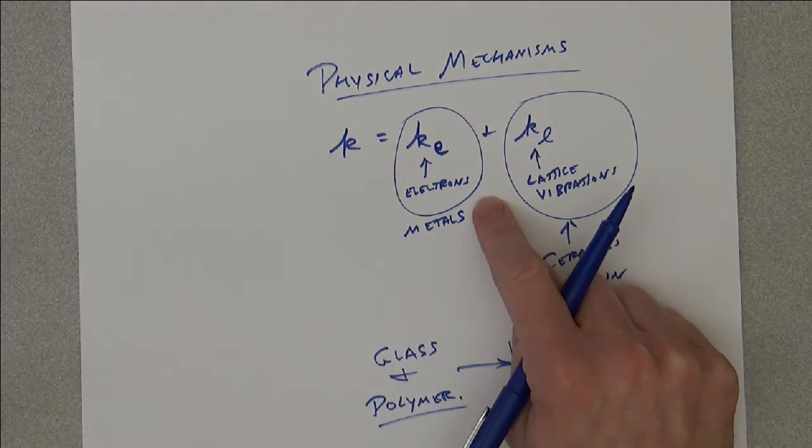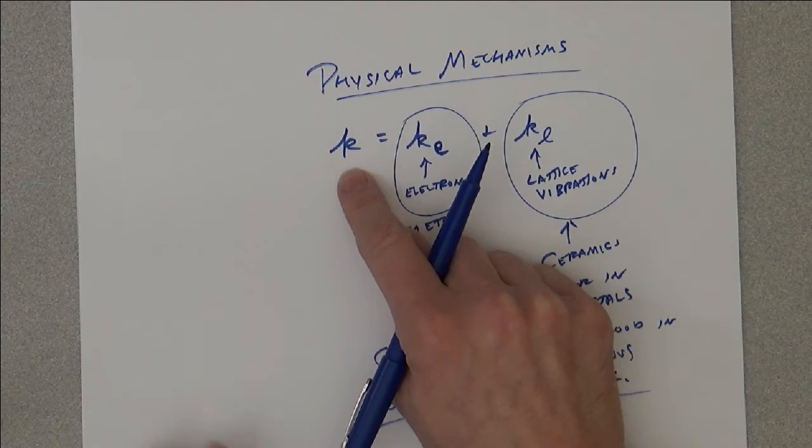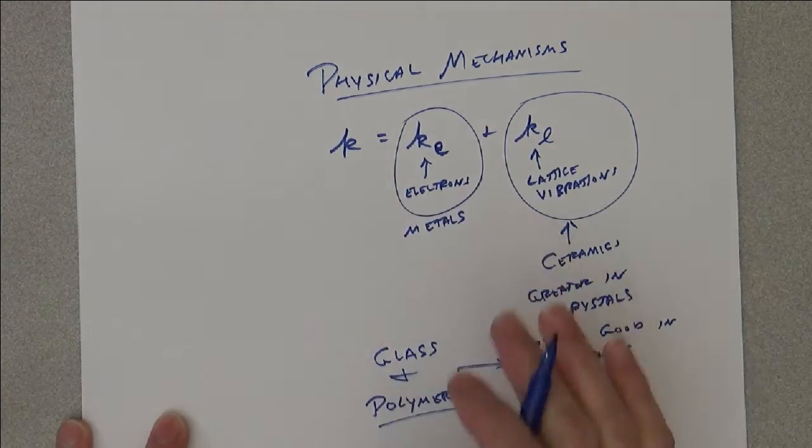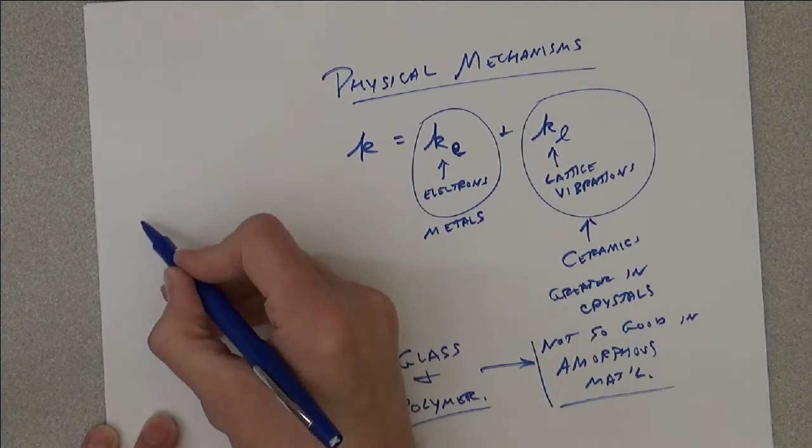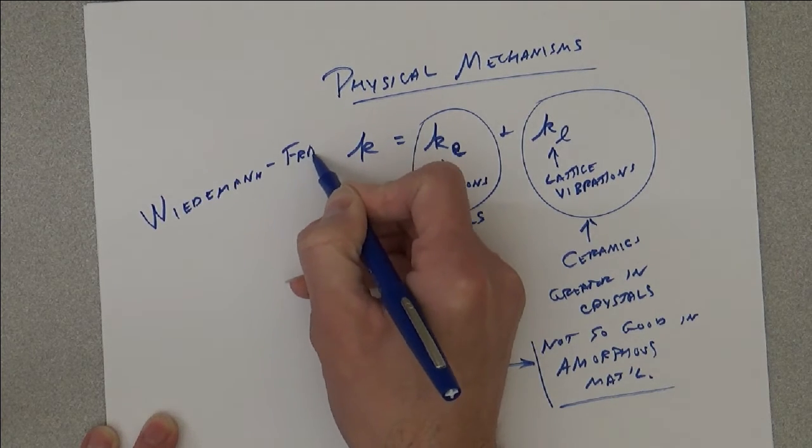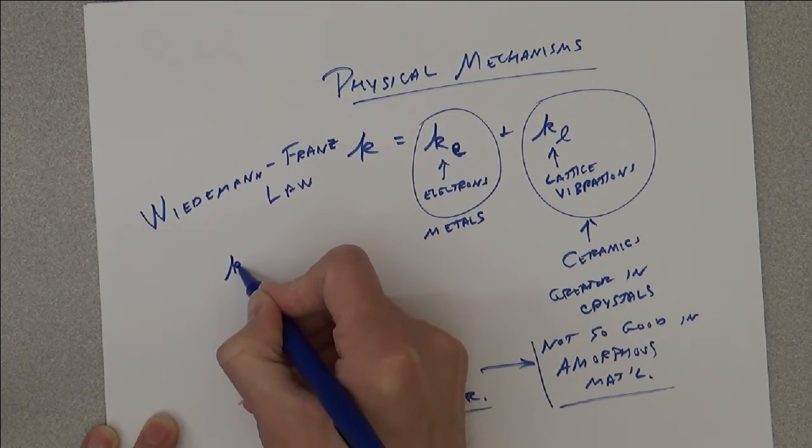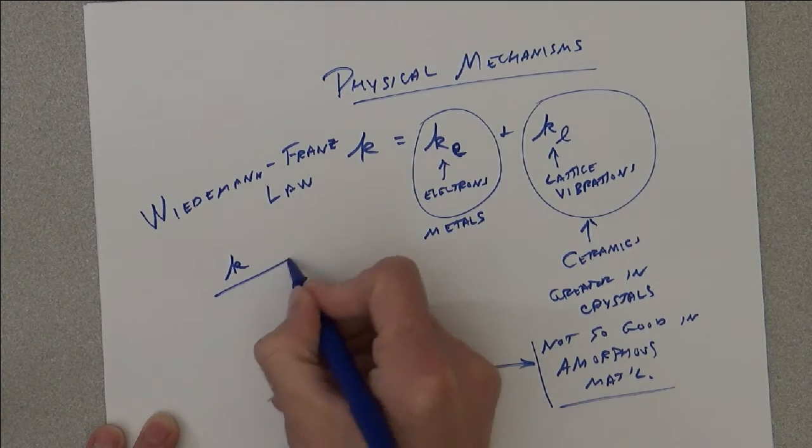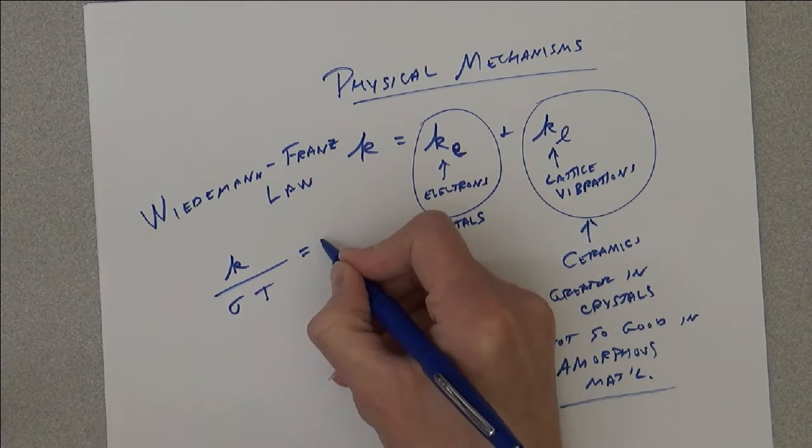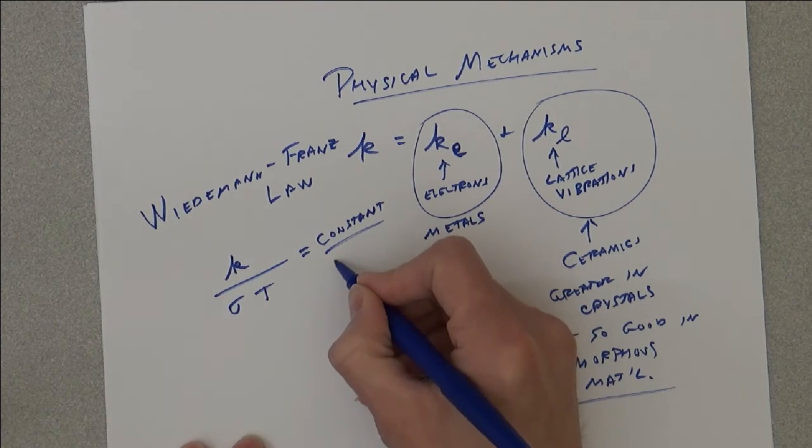In materials that conduct heat well, the electrons and lattice vibrations are actually tied together, for example in metals. We have this thing called the Wiedemann-Franz law, which tells us that the thermal conductivity divided by the electrical conductivity times the temperature is a constant, equal to the Lorentz constant.